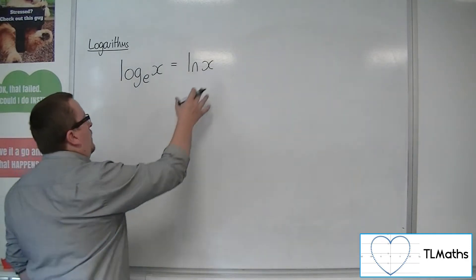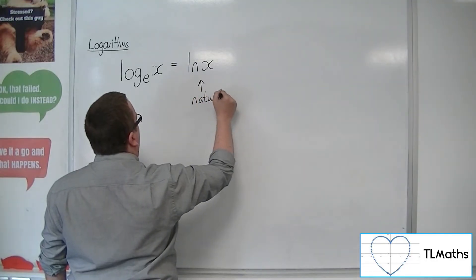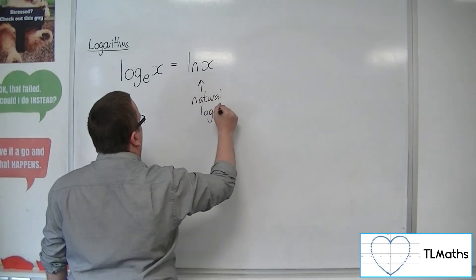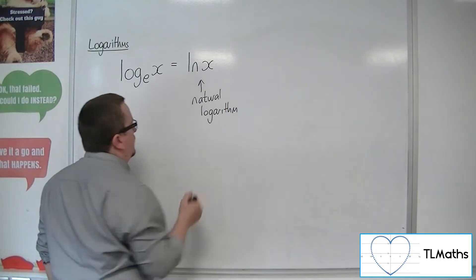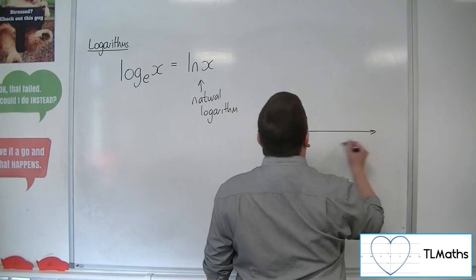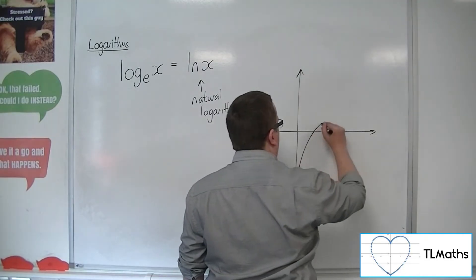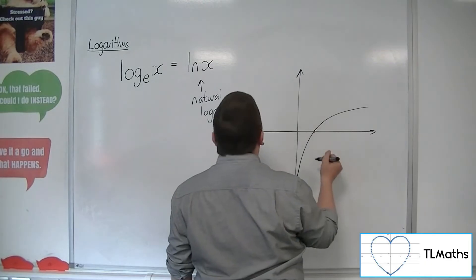Now, this natural logarithm of x - so y equals ln of x looks like a logarithmic curve. You know what log base 2 of x looks like now. So, here is ln of x.